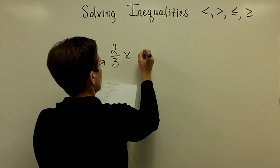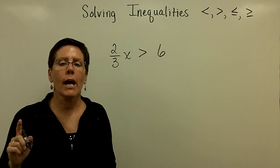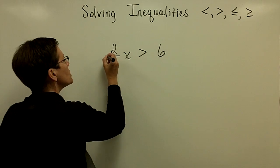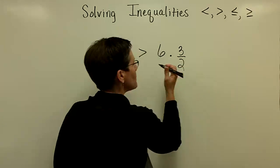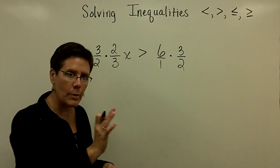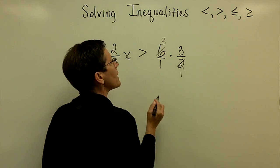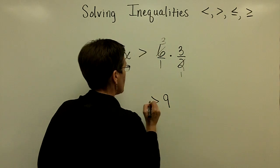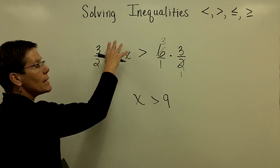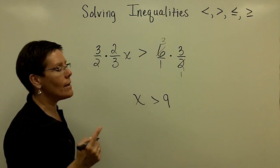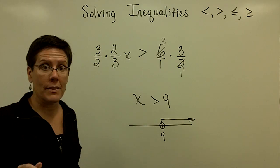I'm going to put a fraction in front of the variable. So (2/3)x is greater than 6. To get x alone, I multiply by the reciprocal of 2/3, which is 3/2. You can keep that 6 over 1 to multiply properly — I prefer to say 2 goes into 6 three times, and 3 times 3 is 9 on the right side. So x is greater than 9, because 3/2 times 2/3 equals 1x. X is greater than 9, which I graph on the number line.